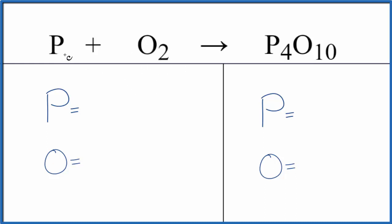Let's balance the equation. One phosphorus and then two oxygens. Product side, four phosphorus and ten oxygen atoms.